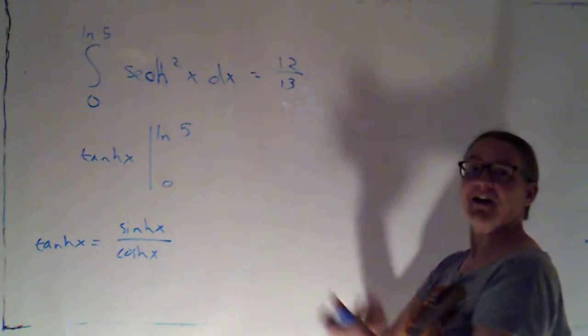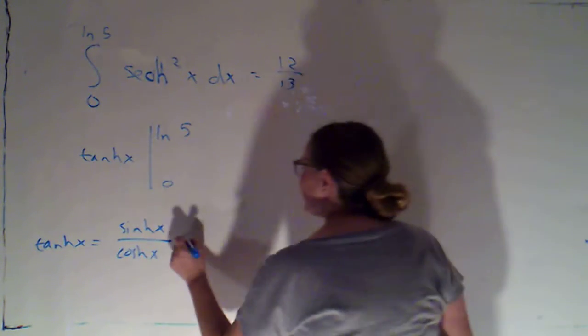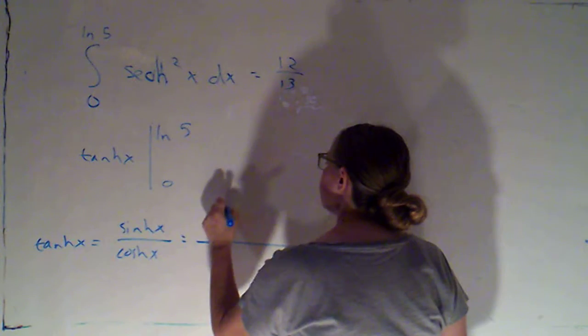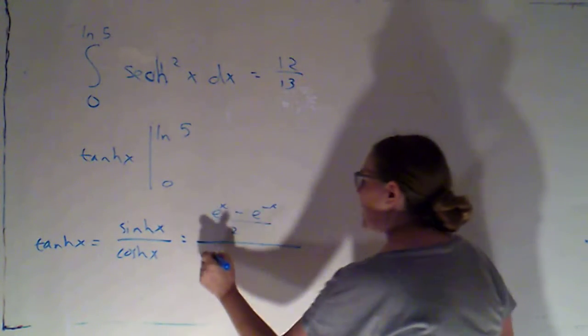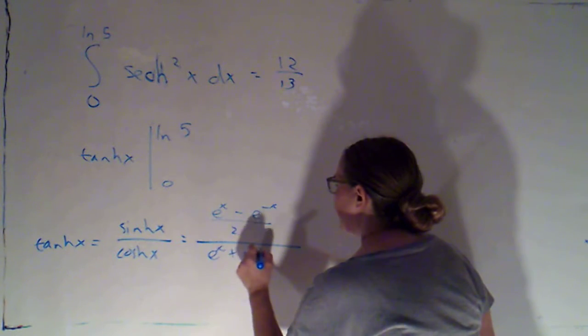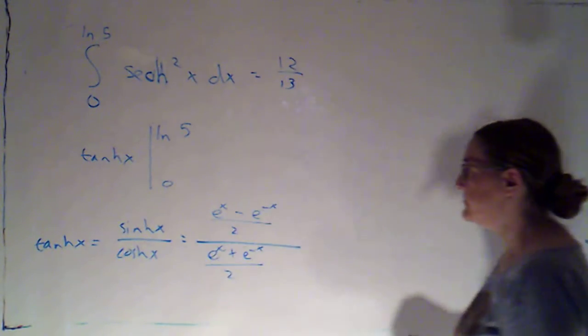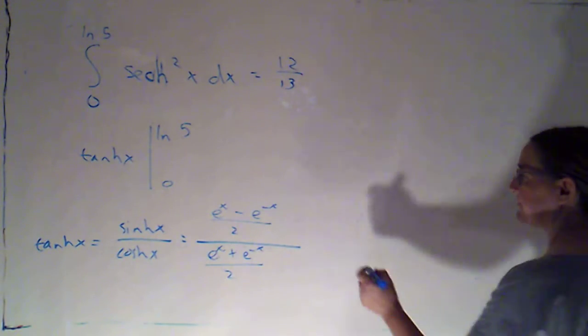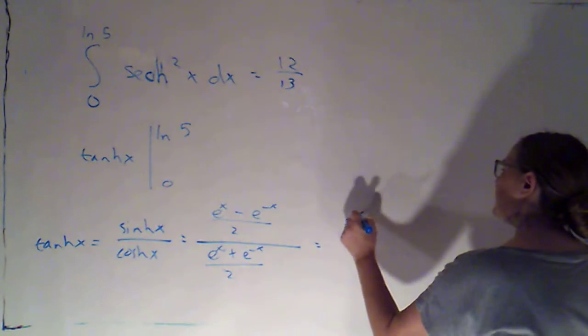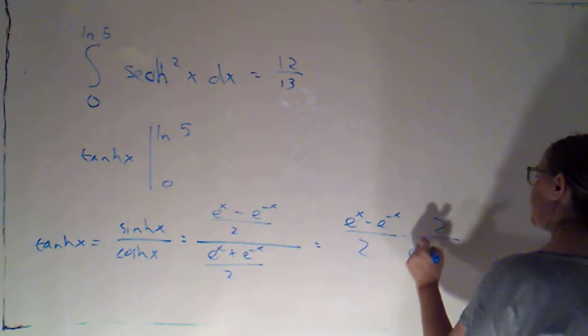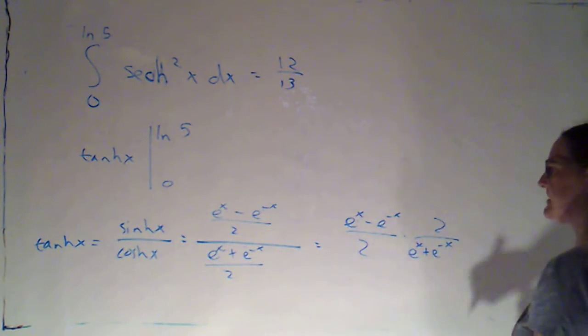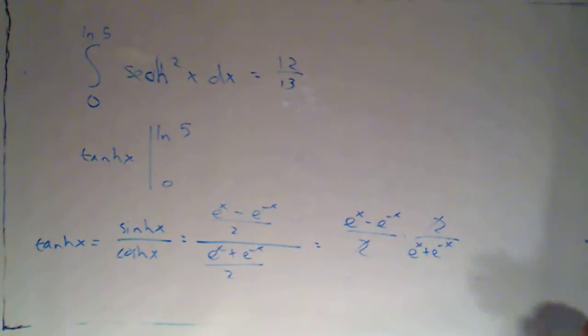and they give me the other ones if I need them. So sinh was e to the x minus e to the negative x over 2, and cosh was e to the x plus e to the negative x over 2. And when I divide fractions, I flip and multiply. So this is e to the x minus e to the negative x over 2 times 2 over e to the x plus e to the negative x. Those 2's will cancel.